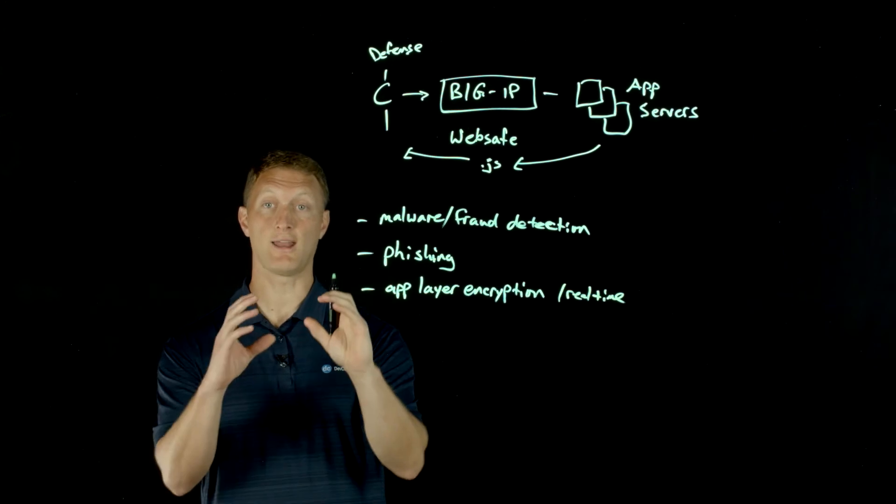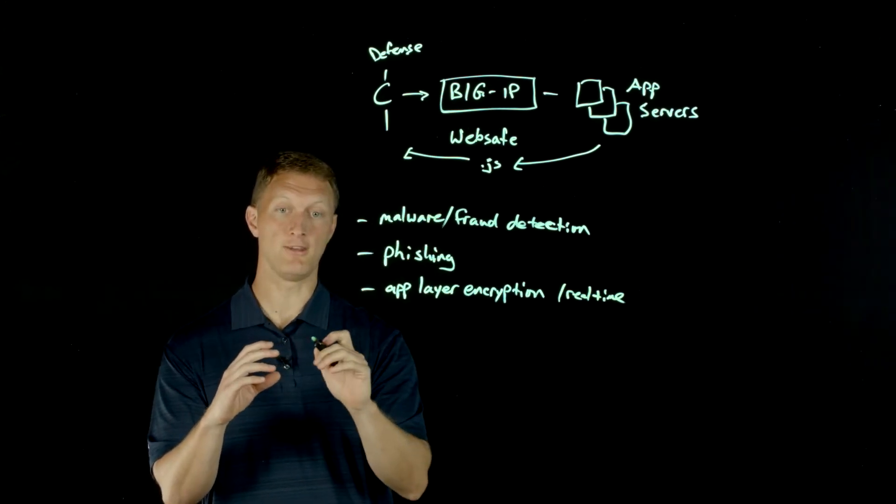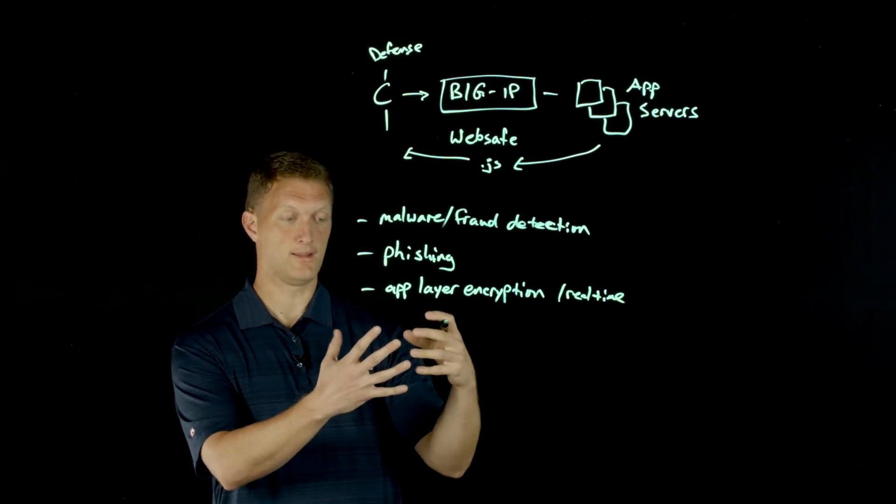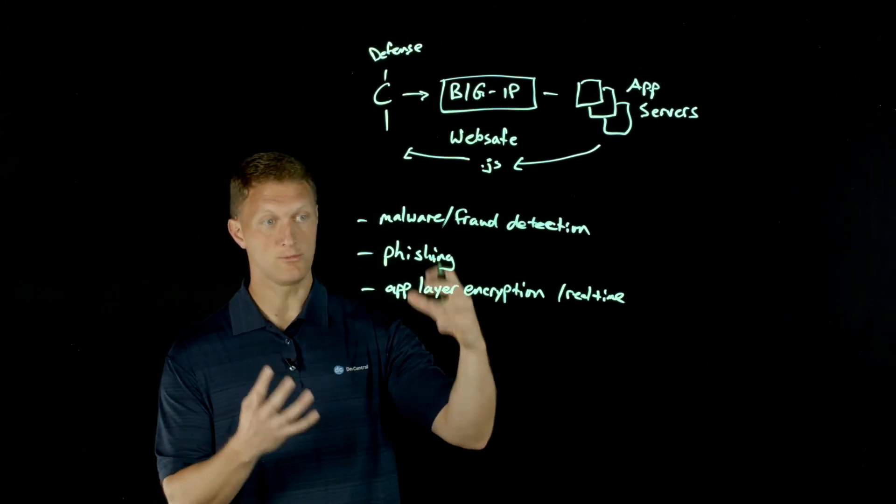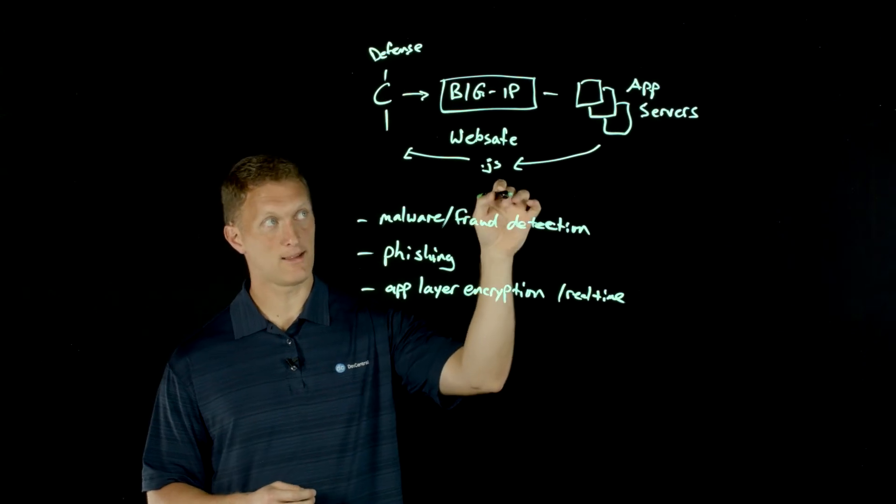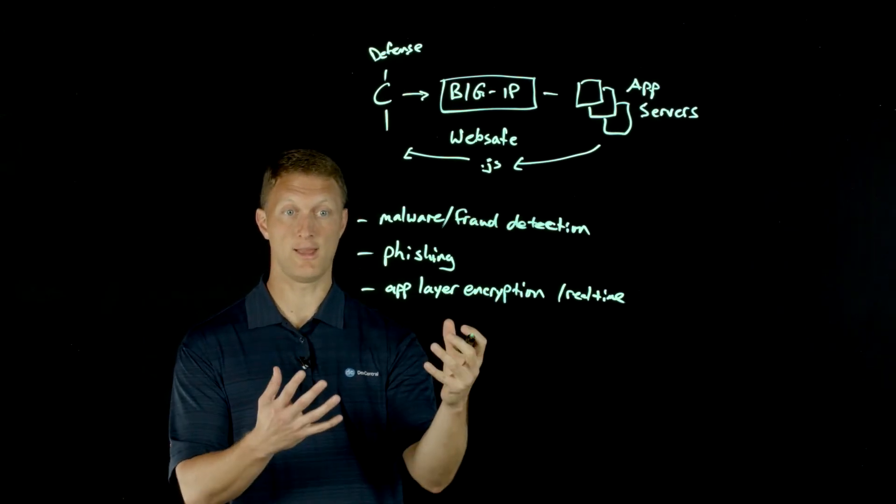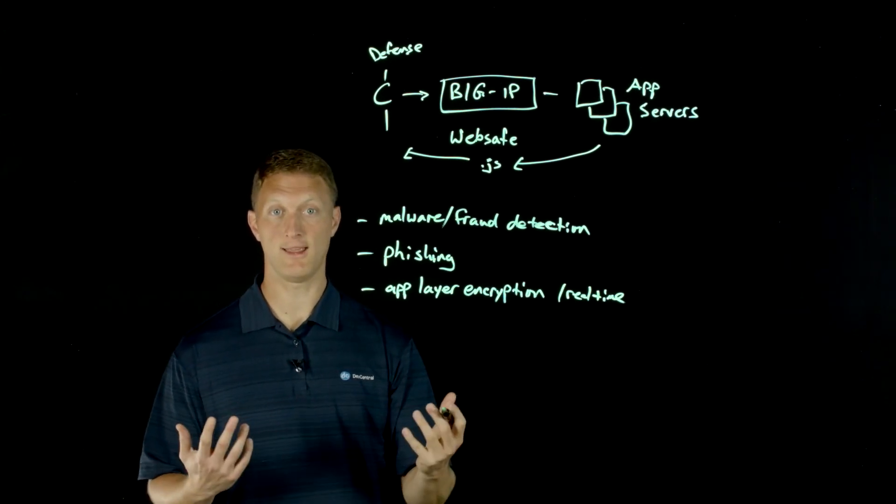Well, app layer encryption - and this is done in real time, by the way - so I'll put real time app layer encryption. What this does is you can actually specifically set parameters on the big IP and you can set the type of, like post for example, the method that you want to look at or that you want to protect. And it can take that exact parameter on that exact webpage and say, hey, as the data is posted to that parameter, then we're going to real time encrypt that data.